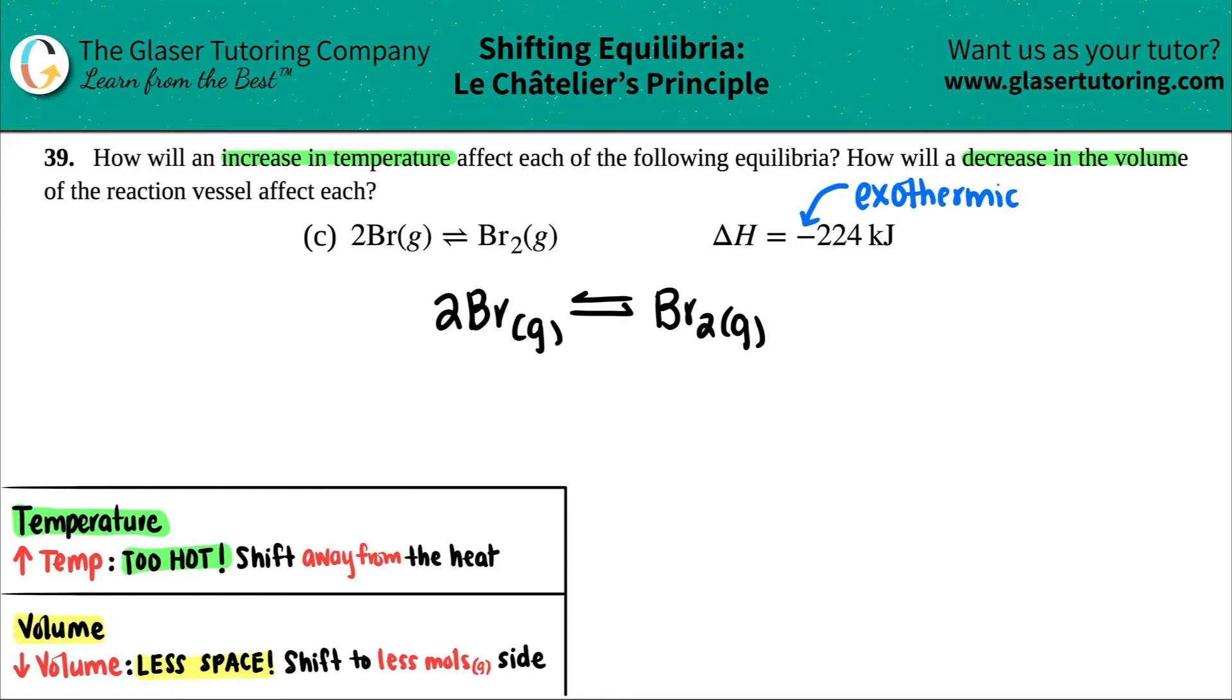And remember back when we did enthalpy, exothermic just meant that the heat energy was being released. If we're talking about it in terms of the left and the right side of a balanced equation, if I'm releasing the heat, the heat is on the product side. If this was endothermic, you would say plus heat on the reactant side. So that's first things first.